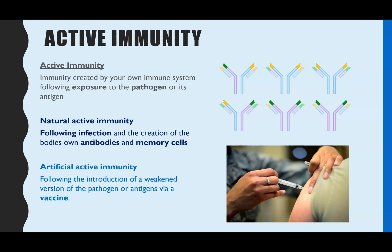In contrast, active immunity is when you have created the antibodies yourself - your immune system has created the antibodies - and that's only the case if you have been exposed to the pathogen or the antigen. This can be subdivided into two types. The first is natural active immunity, where you've been naturally infected with the pathogen and you've created antibodies and memory cells.